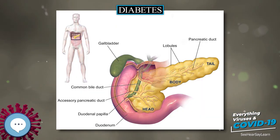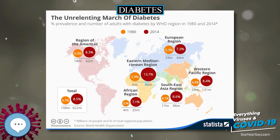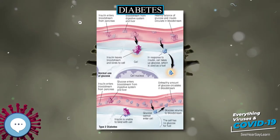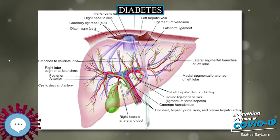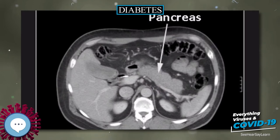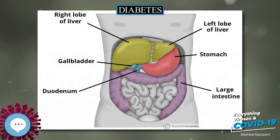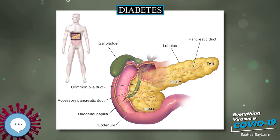Type 1 diabetes is characterized by loss of the insulin-producing beta cells of the pancreatic islets, leading to insulin deficiency. This type can be further classified as immune-mediated or idiopathic. The majority of type 1 diabetes is of the immune-mediated nature, in which a T-cell mediated autoimmune attack leads to the loss of beta cells and thus insulin. It causes approximately 10% of diabetes mellitus cases in North America and Europe. Most affected people are otherwise healthy and of a healthy weight when onset occurs.